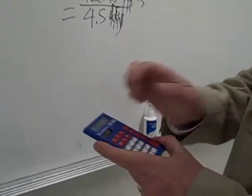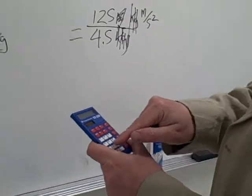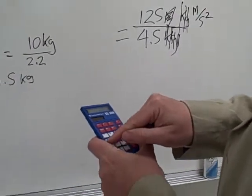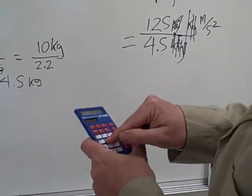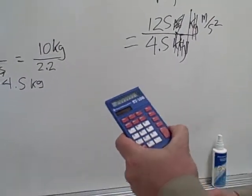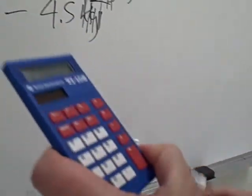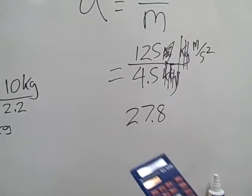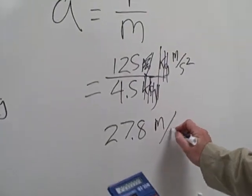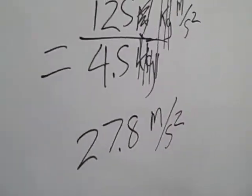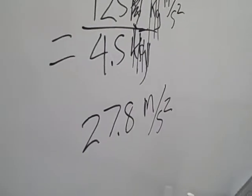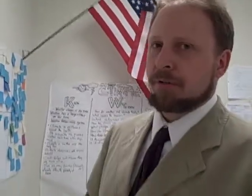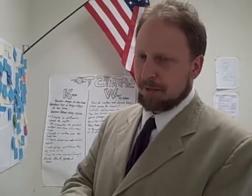Once again I resort to my handy piece of technology — where would we be without you? 125 divided by 4.5. Acceleration is 27.8 meters per second squared, or approximately 3 Gs for those of you who like to think about acceleration due to gravity. Thank you for watching.